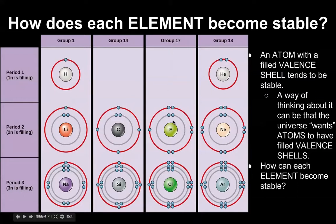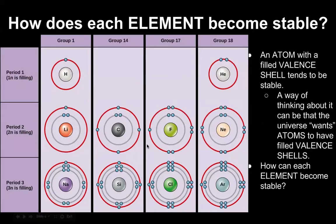Let's skip over to group 17. Fluorine has 7 valence electrons, and the universe wants that shell to be filled. The easy way to get filled is to just add one more electron. If you add one more electron, now you'll have 8 valence electrons on fluorine and it will be more stable. So if you add one electron, its charge will become negative 1. Same with chlorine — it has 7 valence electrons, and if you add one, it's going to have a negative 1 charge. So everything in group 17 is going to have a negative 1 charge when it has a filled valence shell. Group 1 is going to have a positive 1 charge if it has a filled valence shell.